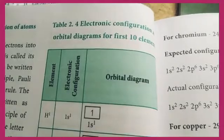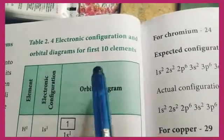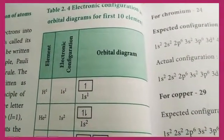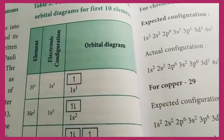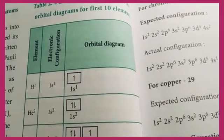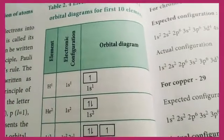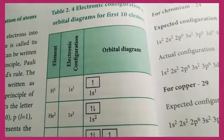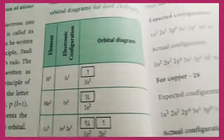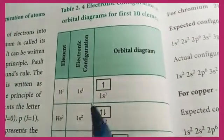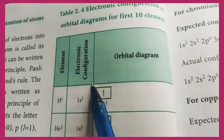Welcome to our channel Grammar in Hands. In this video we are going to learn how to write the electronic configuration and orbital diagram for the first 10 elements. We know very well that there are 118 elements in the periodic table, and from those 118 elements, we are going to cover the first 10 based on atomic number. Here, the elements, their electronic configurations, and orbital diagrams are given.